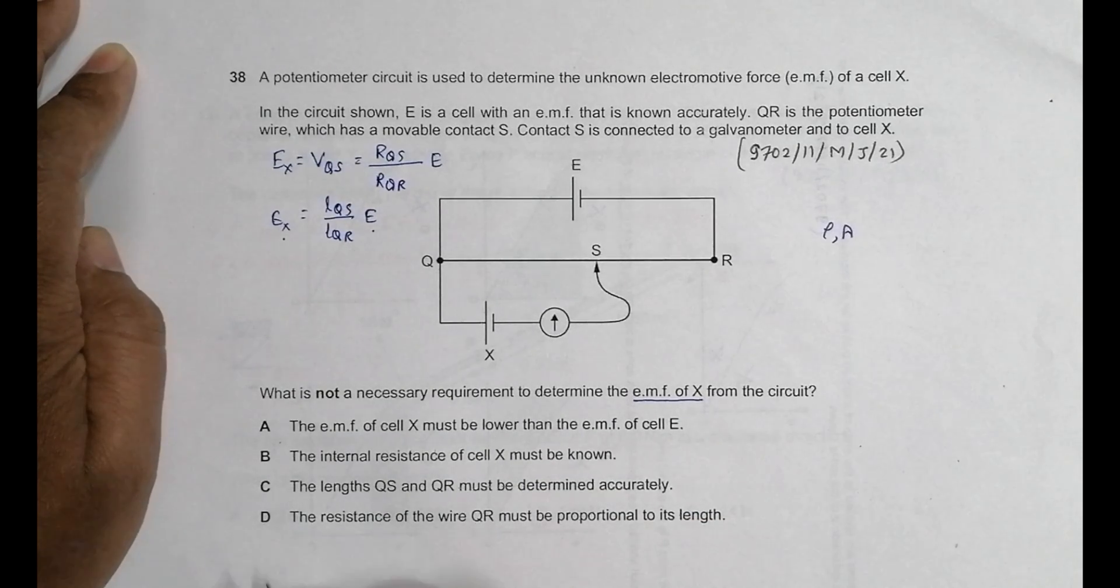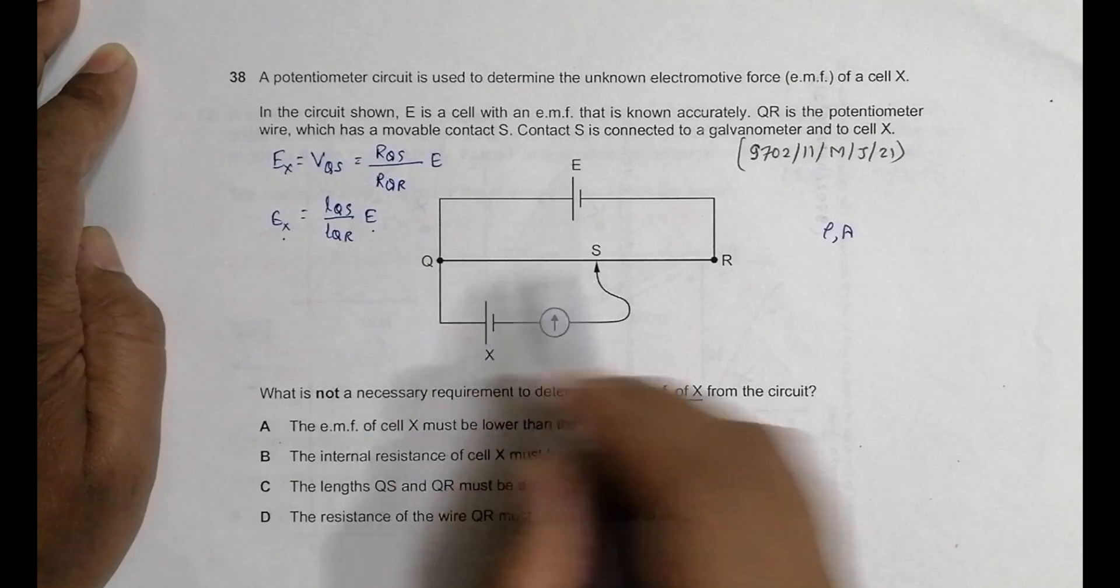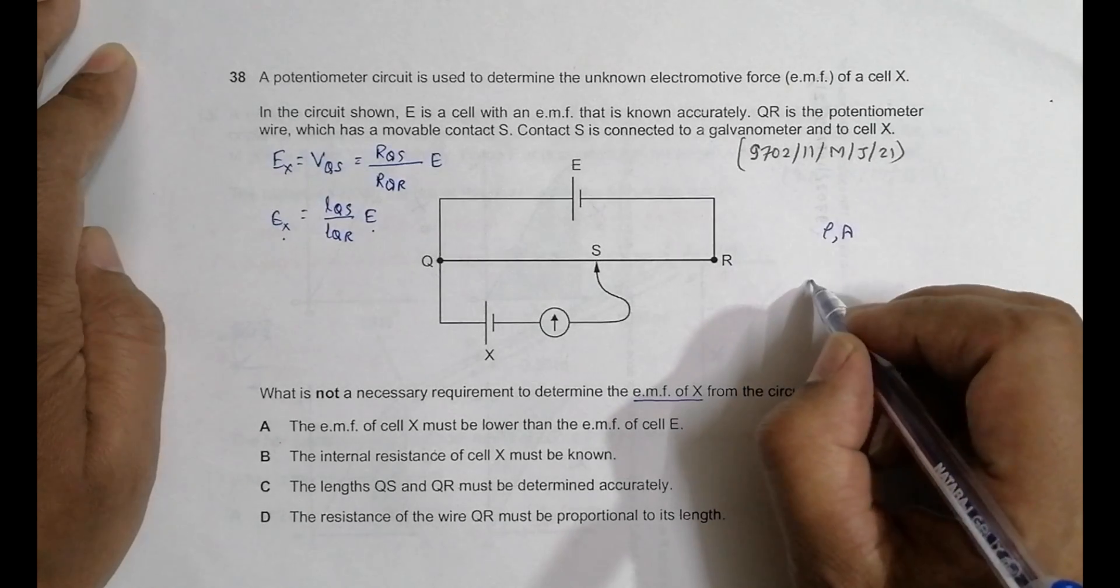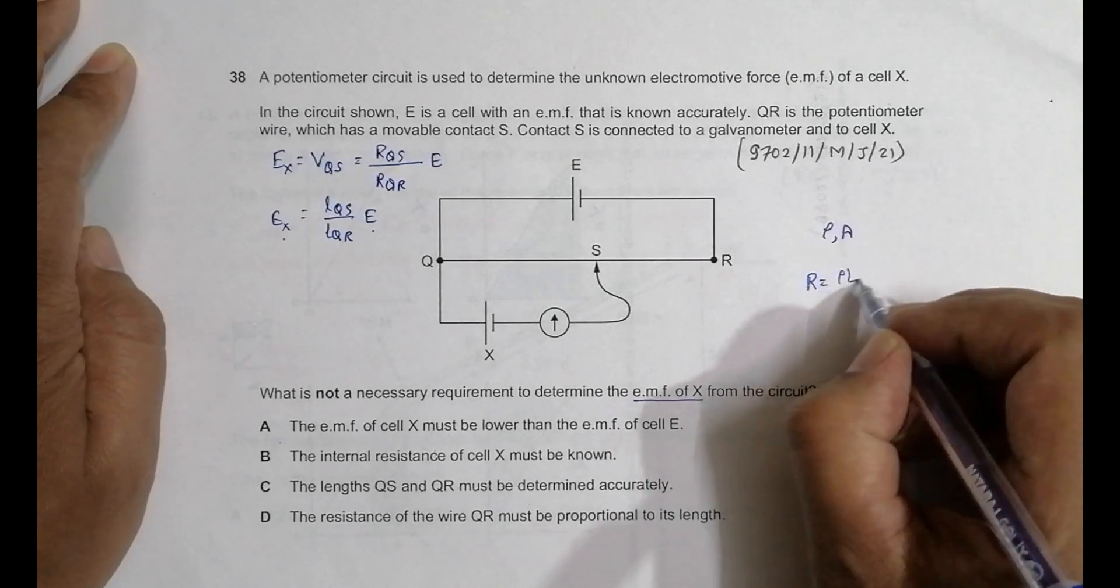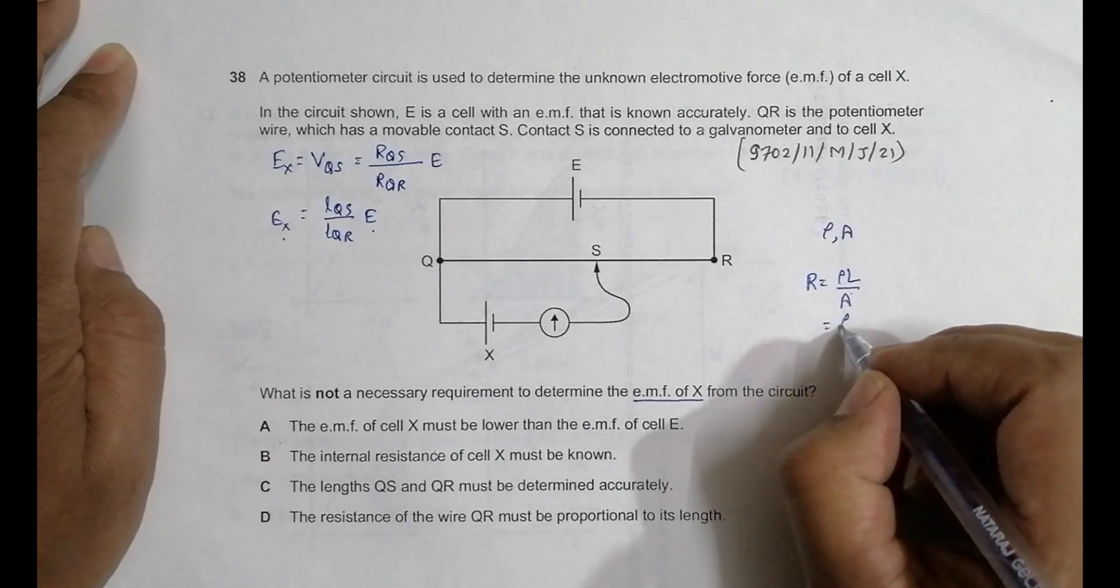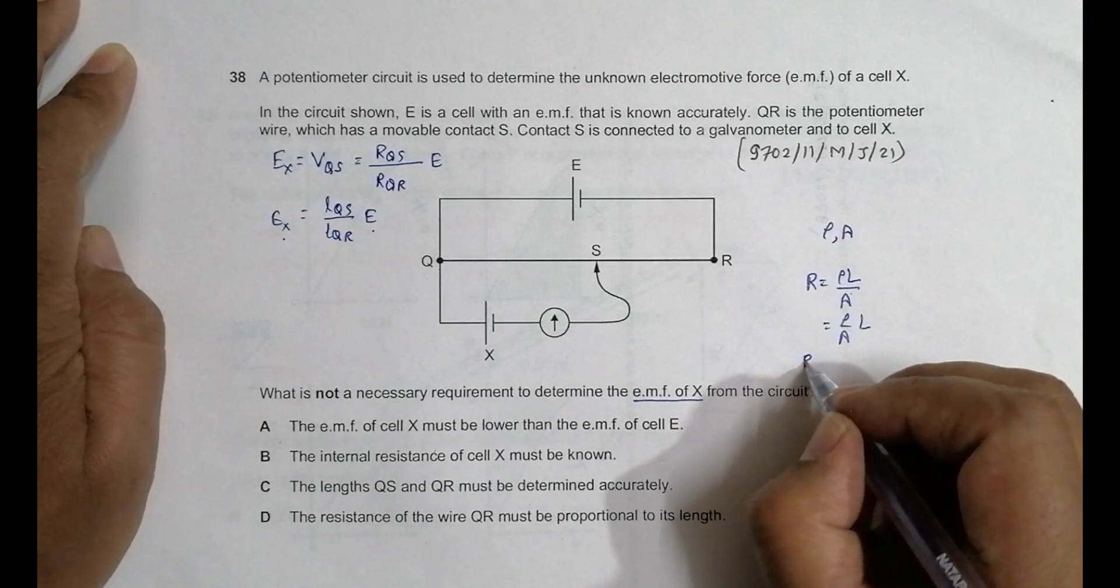Next, let's go to number D. The resistance of the wire QR must be proportional to its length. Yes, this also is a necessary condition because R equals ρL by A. The cross section is uniform, it's very smooth, so that's why it should be equal to ρ by A into L.